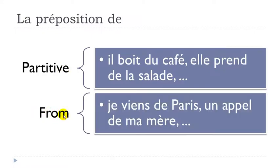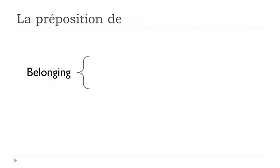The second use is the translation of 'from' in English. For example: je viens de Paris — venir means to come — I come from Paris. In that case, de is translated as 'from.' Another example: un appel de ma mère — a call from my mother. So it's exactly this 'from' concept in English.